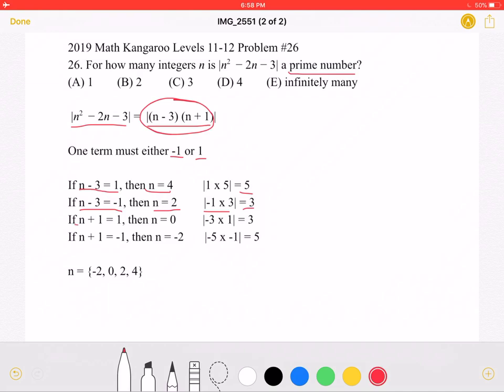If n + 1, which is the other factor, is equal to 1, then n would be equal to 0. If n + 1 is equal to -1, then n is equal to -2.